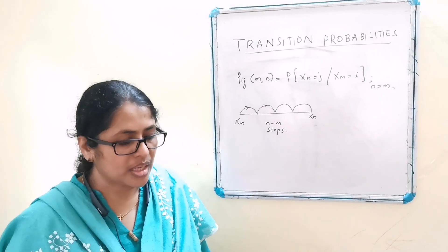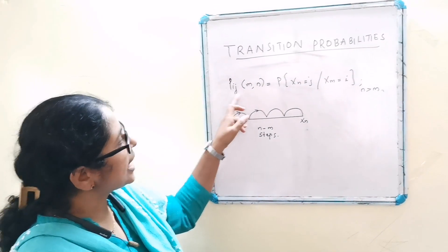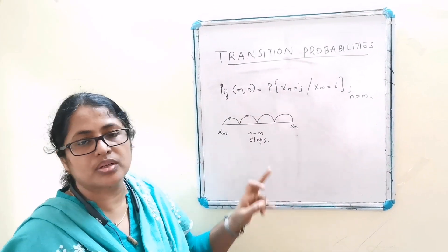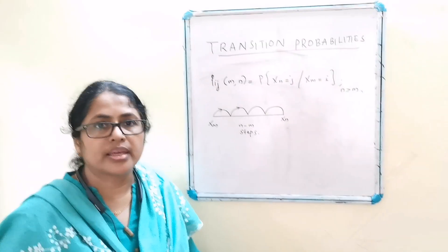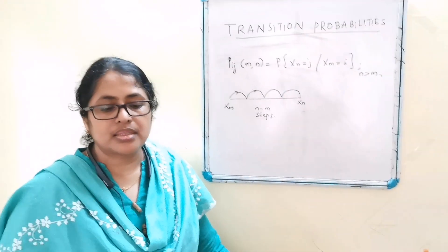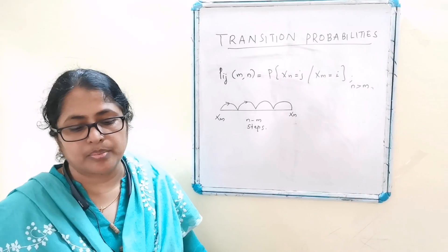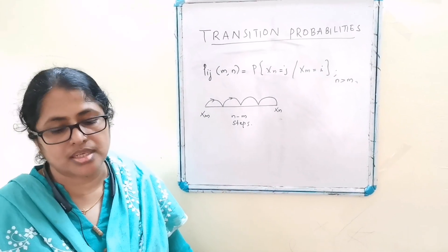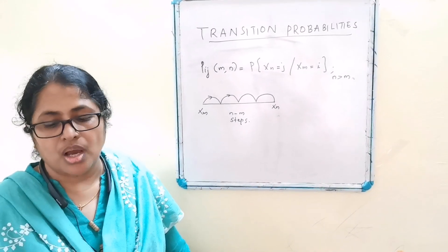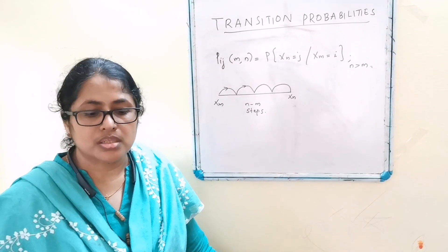Otherwise, if pij(m,n) depends on i, j, m, and n, then the chain is called a Markov chain with non-stationary transition probability or non-homogeneous Markov chain.